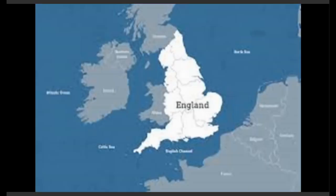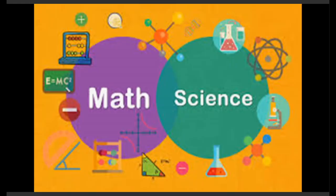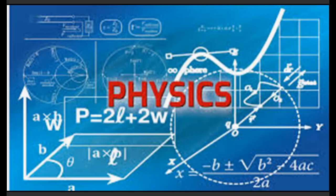Babbage founded the Analytical Society, whose aim was to introduce developments from the European continent into English mathematics. In 1816, he was elected an academician of the Royal Society of London. He was instrumental in founding the Royal Astronomical and Statistical Societies. The Royal Astronomical Society's original aims were to reduce astronomical calculations to a more standard form and to propagate data — directions closely connected with Babbage's ideas on computation. In 1824, he won its gold medal for his invention of an engine for calculating mathematical and astronomical tables.